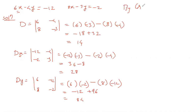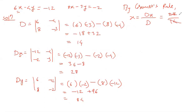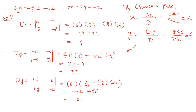By Cramer's rule, x equals Dx over D: 28 divided by 14 equals 2. And y equals Dy over D: 84 divided by 14 equals 6. Therefore, the solution is x equals 2, y equals 6. This is the required solution using Cramer's rule.